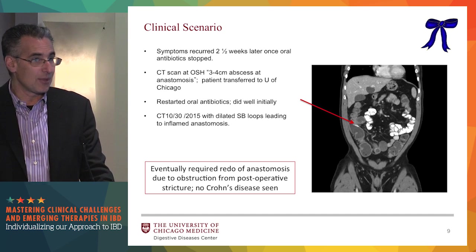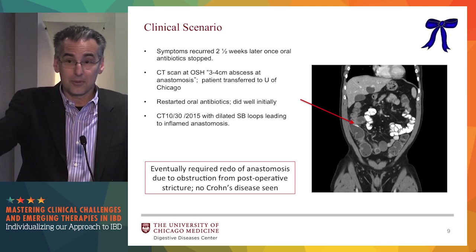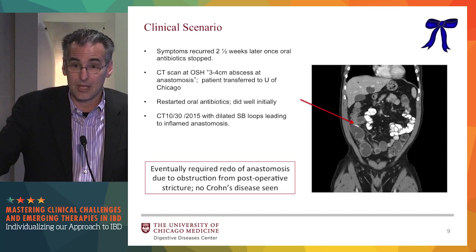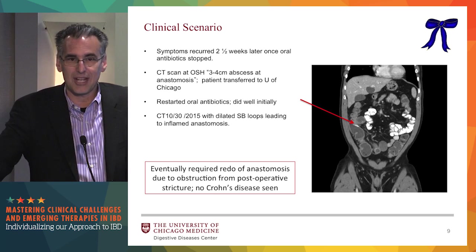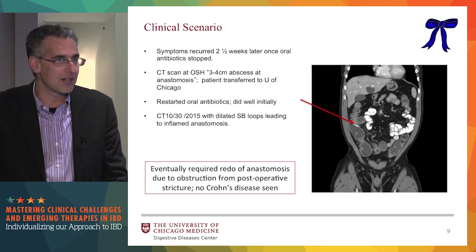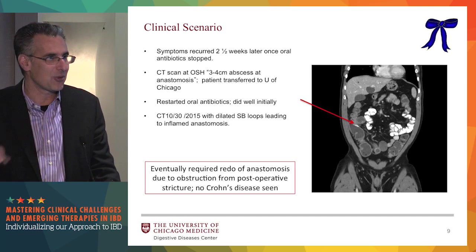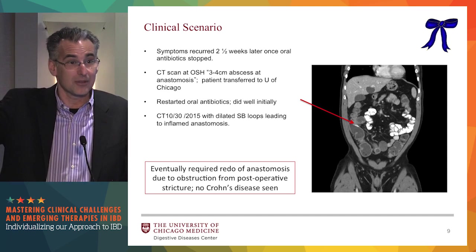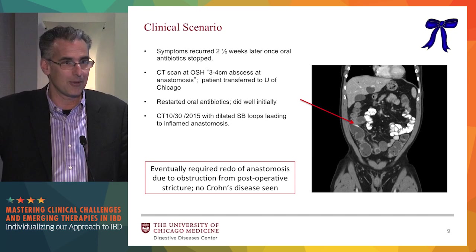Again the question was raised — does this patient have a Crohn's disease stricture? We know that even surgical anastomoses from diverticular surgeries can result in a stricture. Now there was no visible abscess, but should we treat with antibiotics and then start infliximab? Everyone was wanting to start infliximab to treat the stricture. How many would think that was reasonable — treat through the infection and then treat the stricture and Crohn's with infliximab? No one raised their hand.